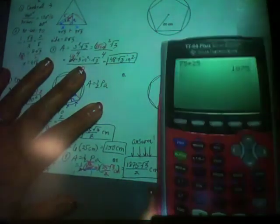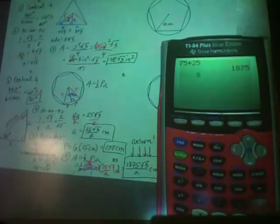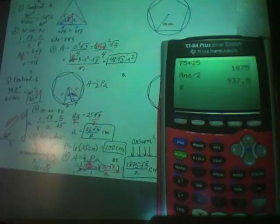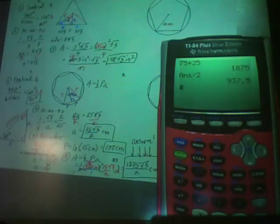Final answer: 1875√3/2 cm². The textbook might divide 1875 by 2 and write a decimal in front of the radical — that's okay if it terminates, but if it's a repeating decimal you'd lose accuracy by rounding, so be careful.